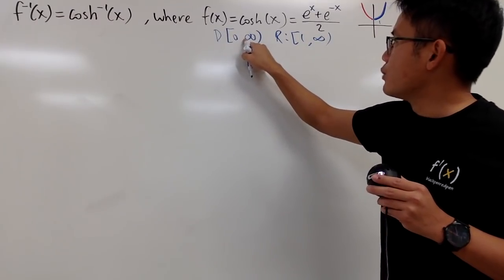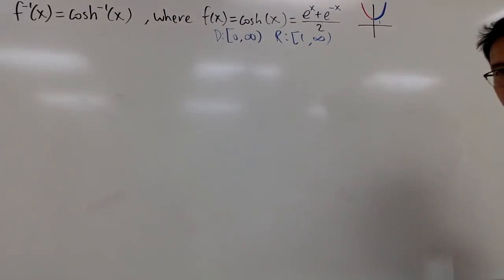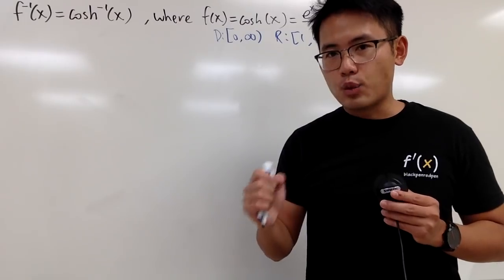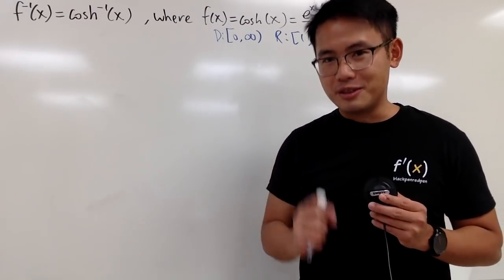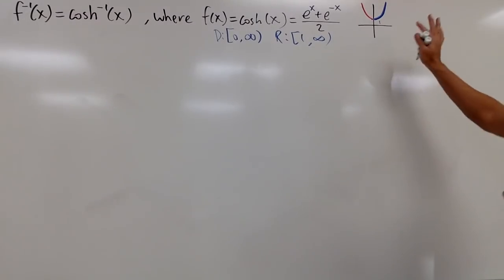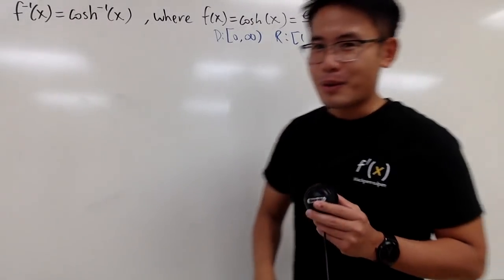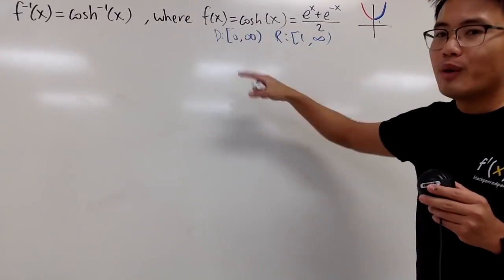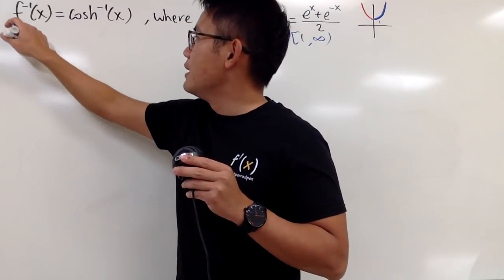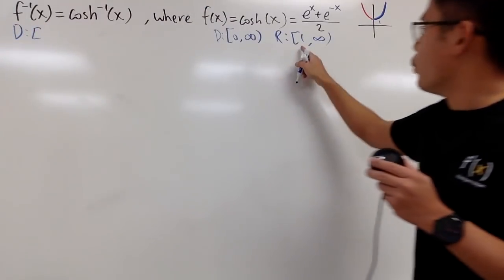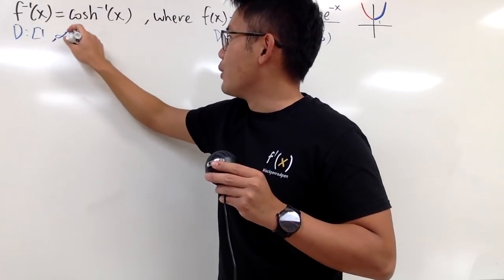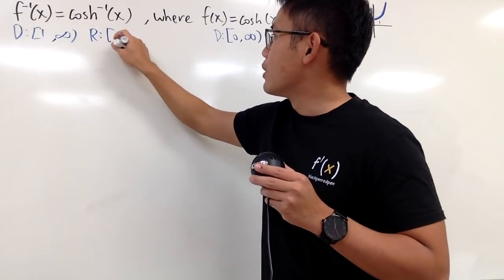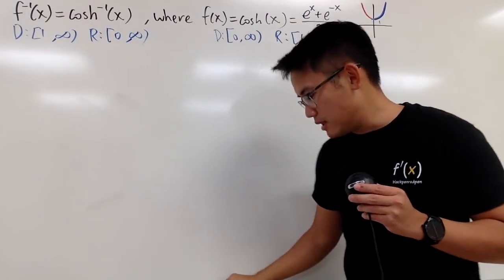You have to pay attention to the domain and the range, especially when a function doesn't pass the horizontal line test. Just like x squared: the inverse is square root of x under the condition that x is greater than 0. Similarly, the range of the original becomes the domain of the inverse — so the domain of the inverse is [1, ∞), and the range is [0, ∞).